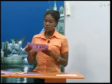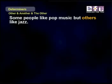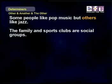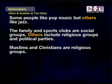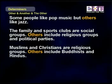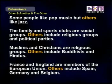Here are some examples of sentences talking about unlimited or unknown groups. Some people like pop music, but others like jazz. The family and sports clubs are social groups. Others include religious groups and political parties. Muslims and Christians are religious groups. Others include Buddhists and Hindus. France and England are members of the European Union. Others include Spain, Germany, and Belgium.